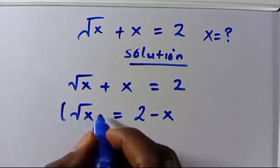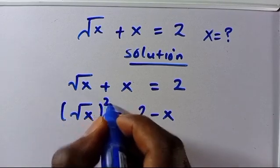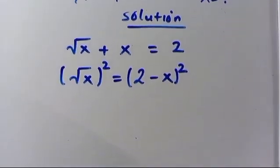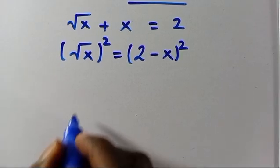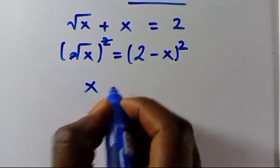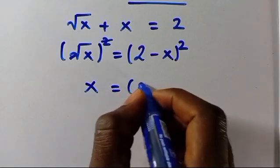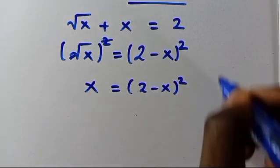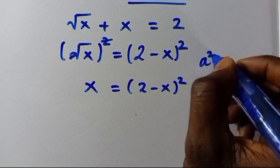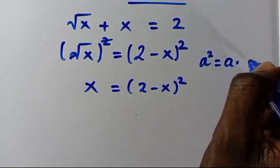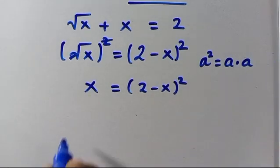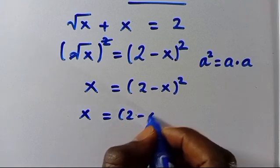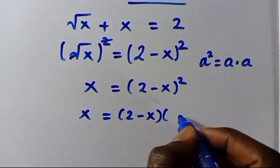Now to eliminate this root, let's take the square of both sides, raising to the power of 2. So from here we have x equals (2 minus x) to the power of 2. When we have a² it equals a times a.